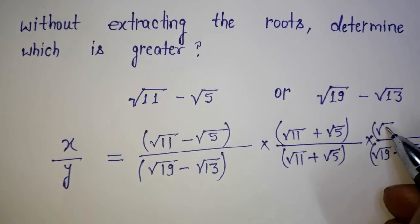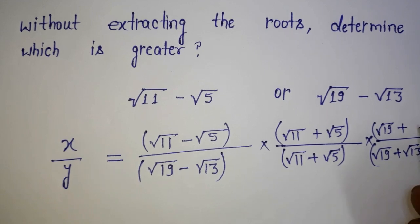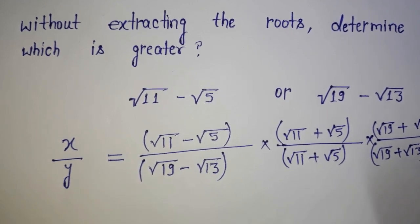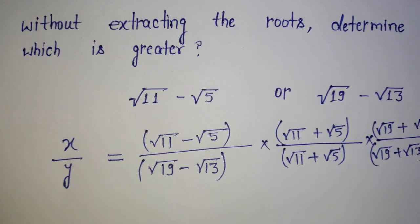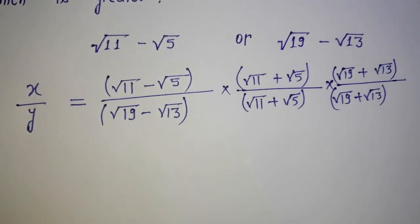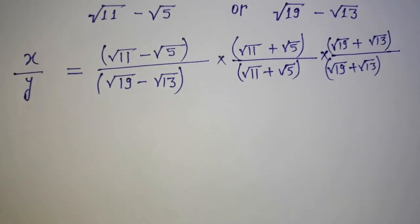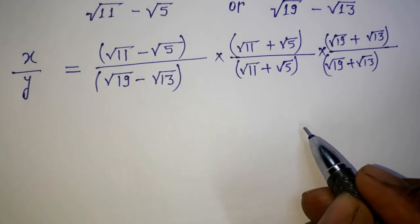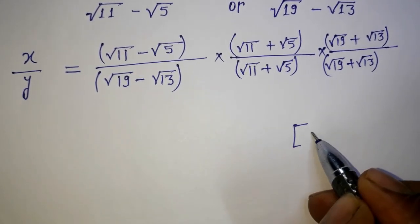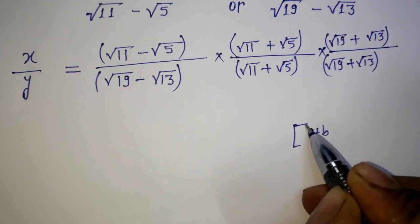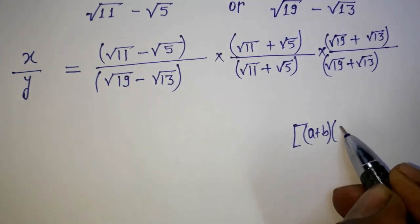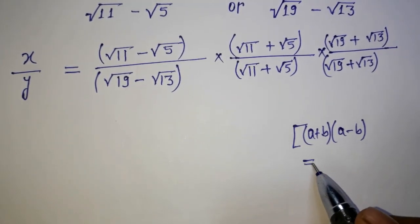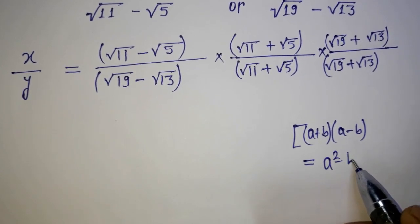And root 19 plus root 13. Now it's time to solve this. Before going to solve, I am just recalling the formula: a plus b into a minus b is equal to a squared minus b squared.